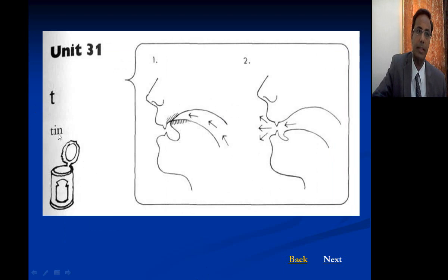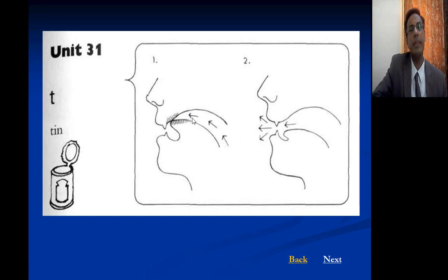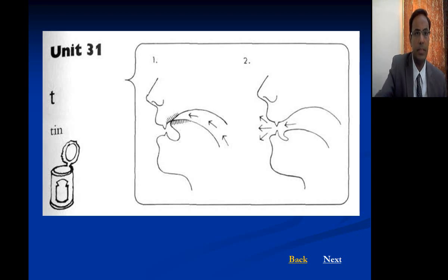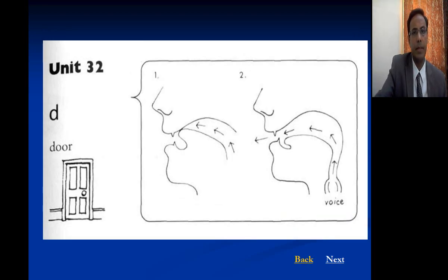For the T sound, there is complete closure between the tip of the tongue and the alveolar ridge, air is stopped, and then it is released suddenly — it is a plosive or stop sound, as in 'tin.'